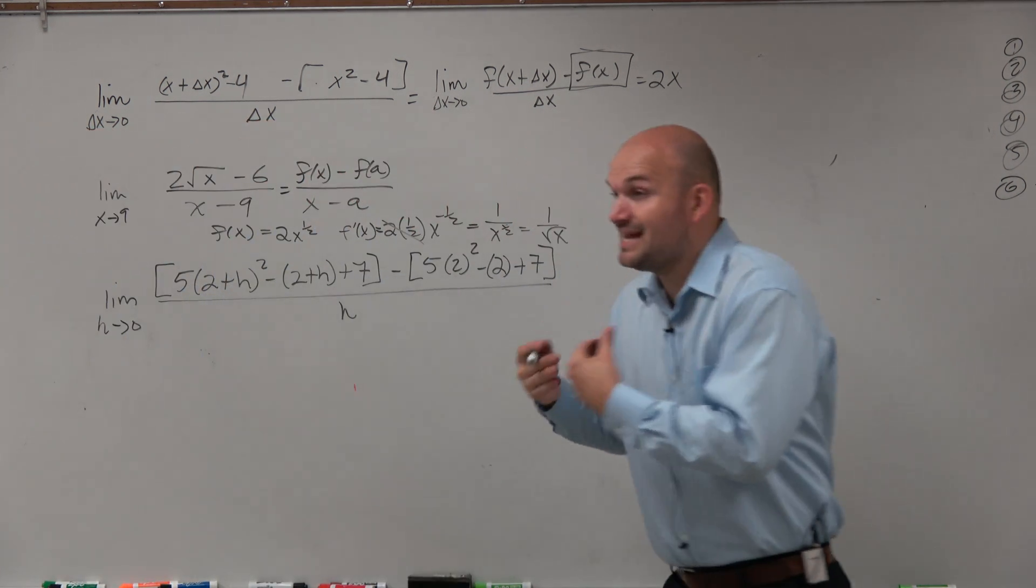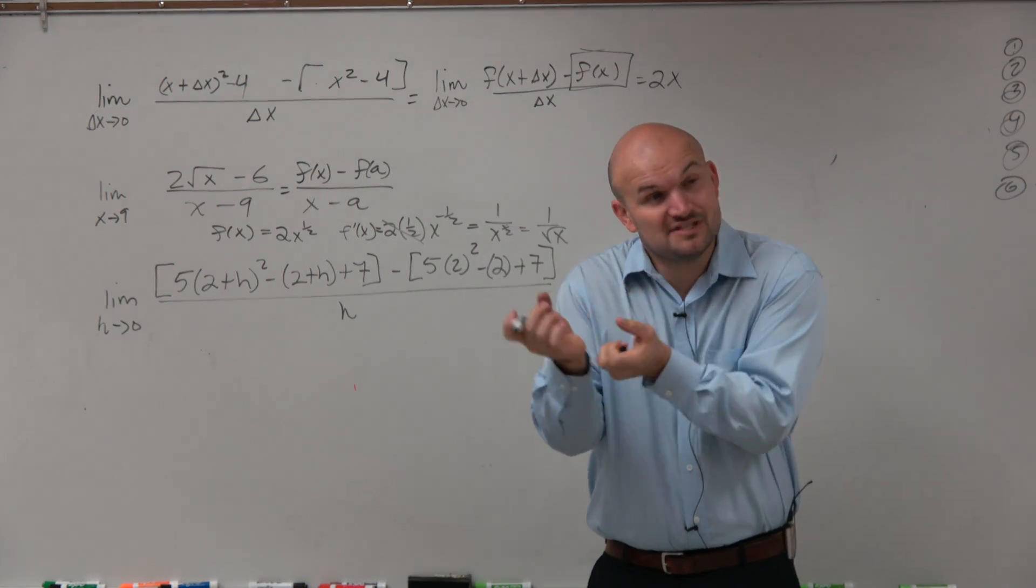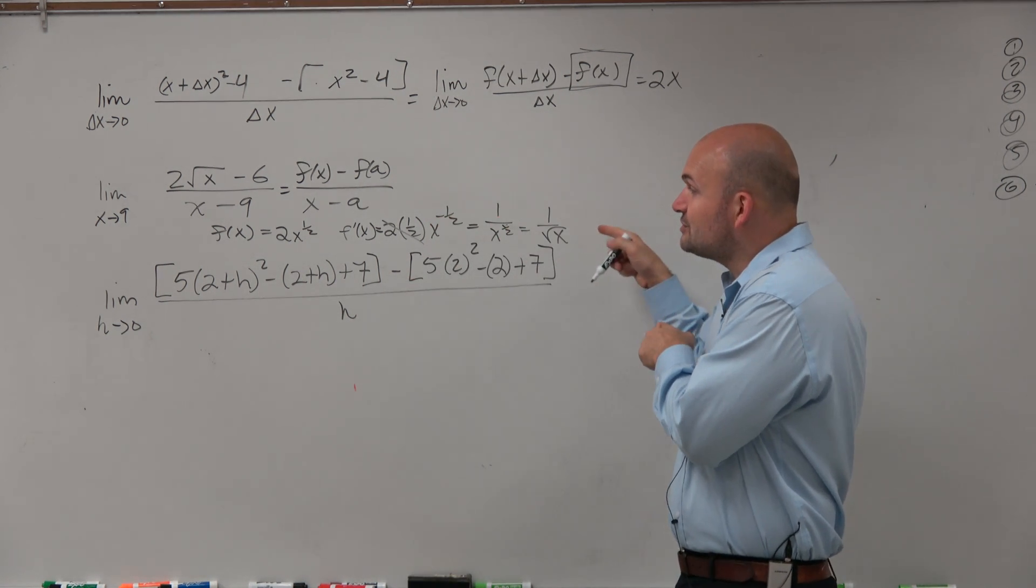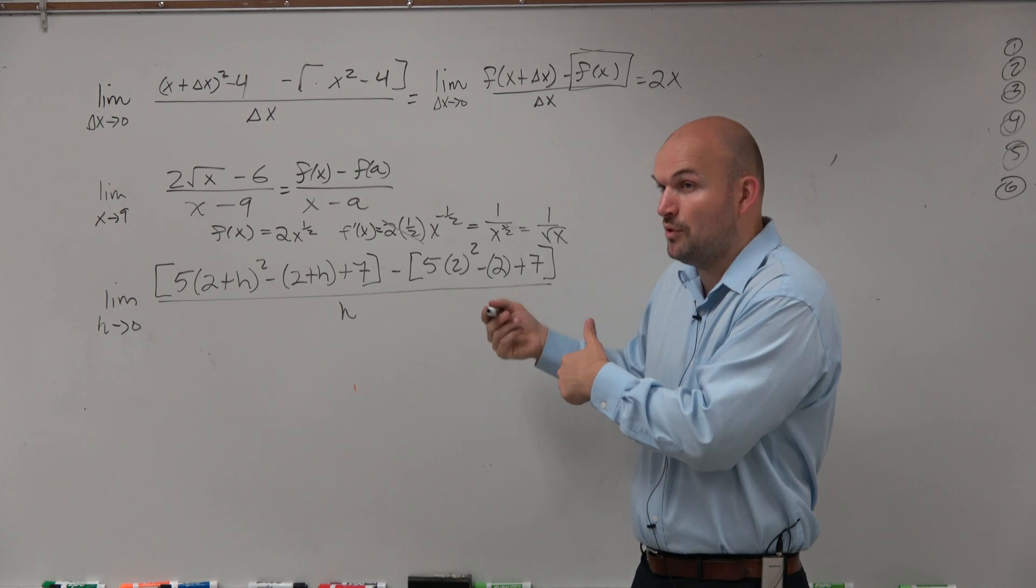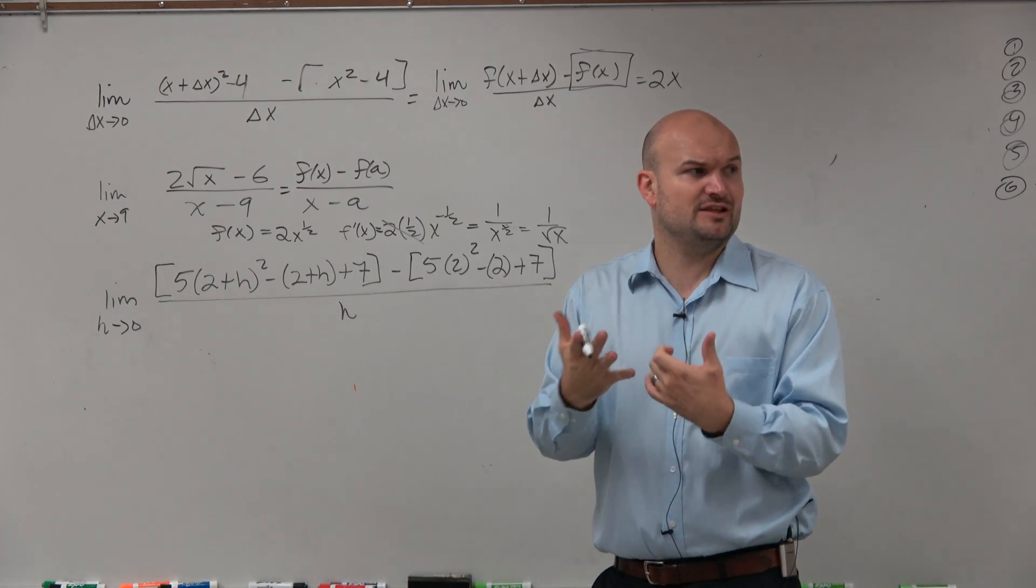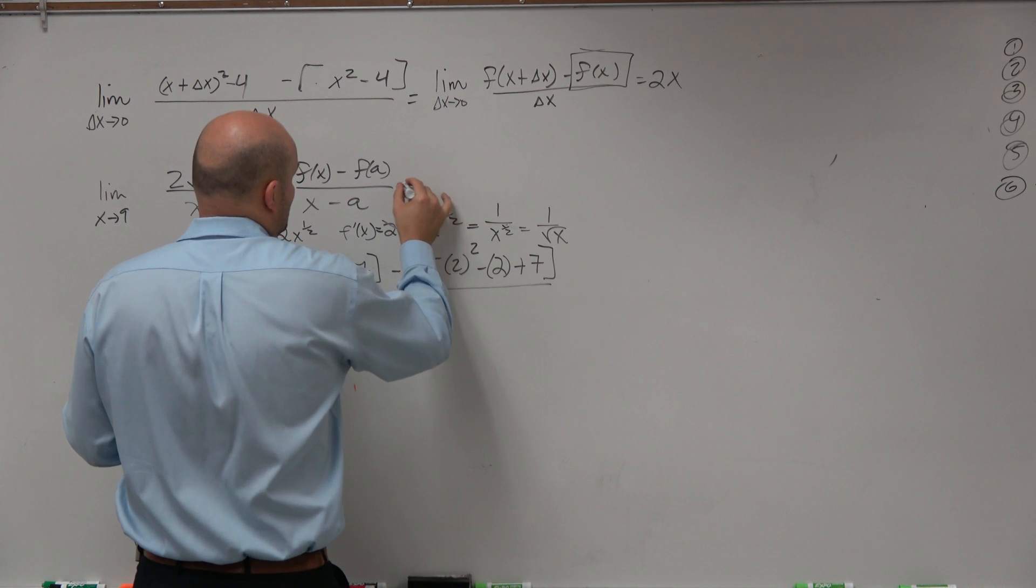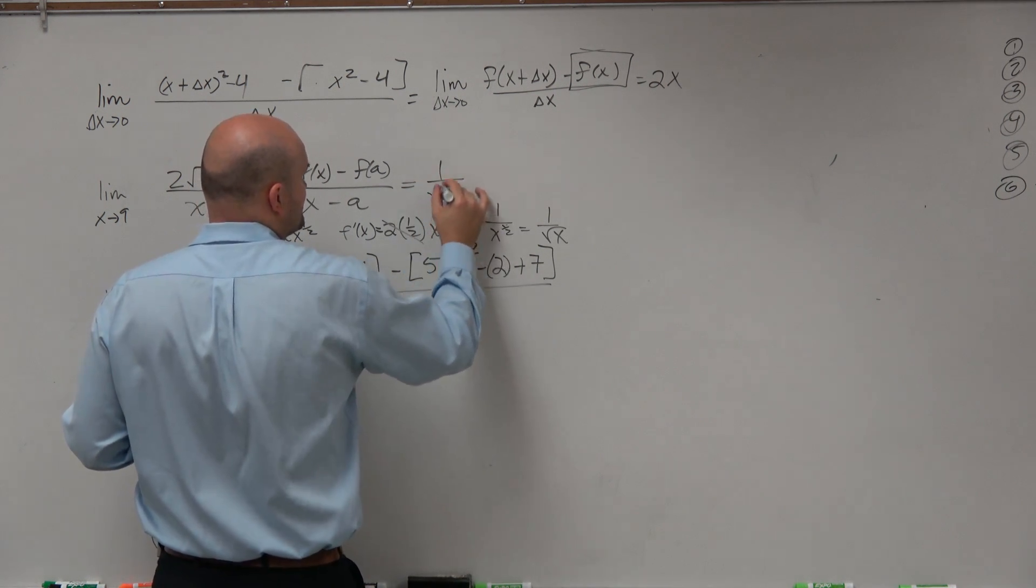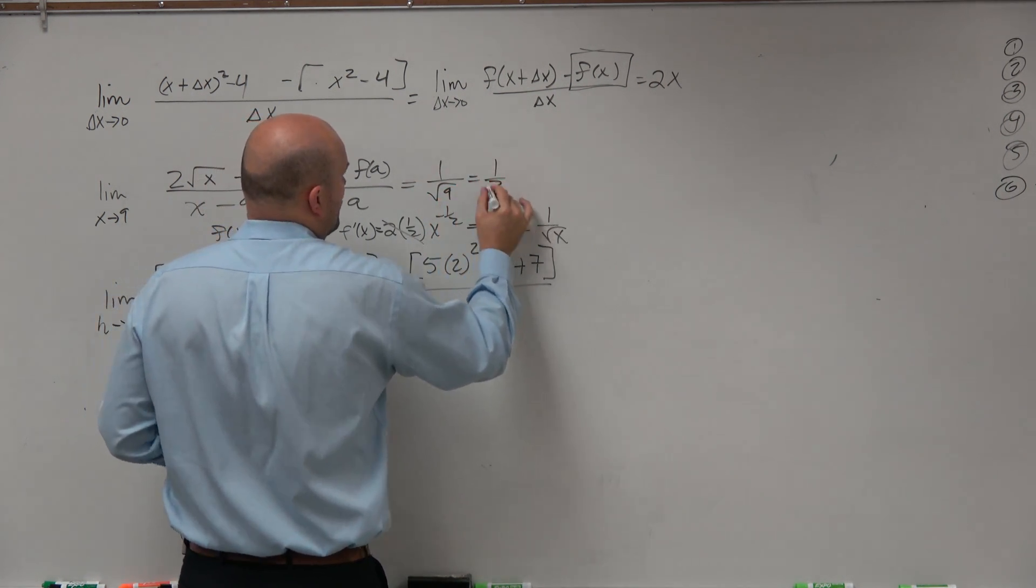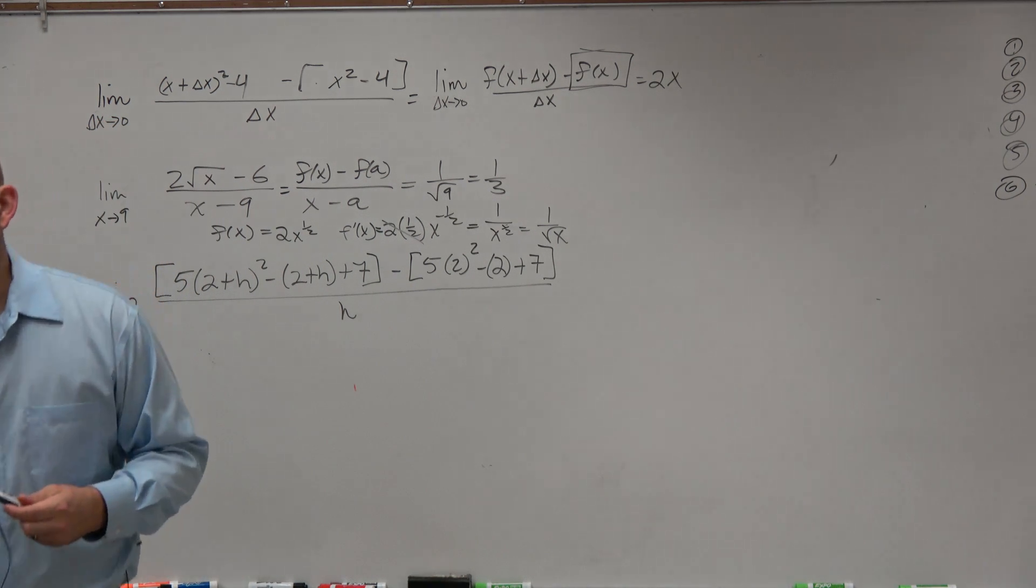Okay. So now, but again, guys, we're not trying to find... Again, this definite derivative is trying to find the value of the function at a given point. What point is it trying to find the derivative of? Nine. So this is really just finding 1 over the square root of 9, which is just 1 third. Boom. Done.